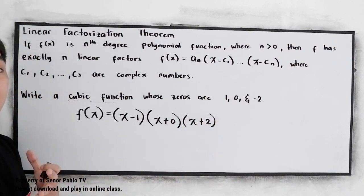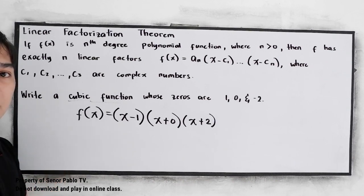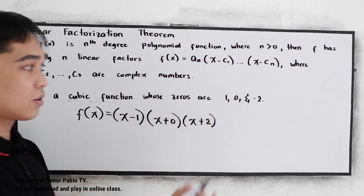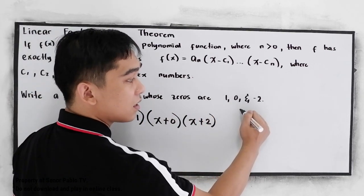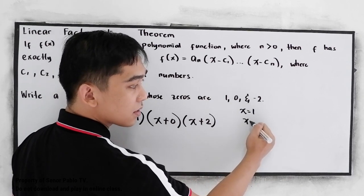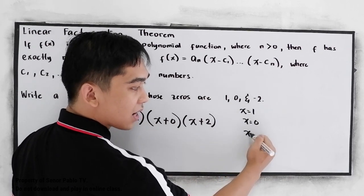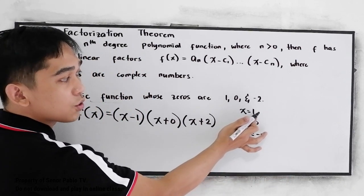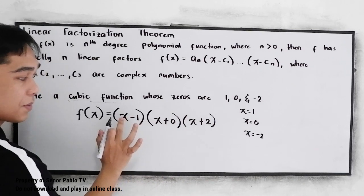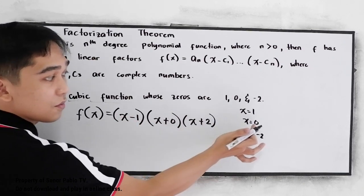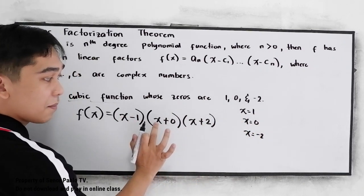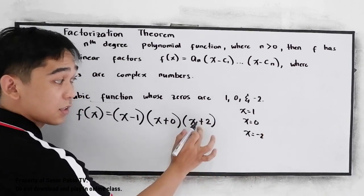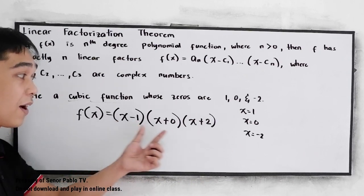We're just going to get the reverse process in getting the roots. So, studying the given: x is equal to positive 1, x is equal to 0, and x is equal to negative 2. If we move 1 to the left side, that becomes x minus 1. If we move 0, that becomes x plus 0. And if we move negative 2, that becomes x plus 2. That's why we have the following factors.